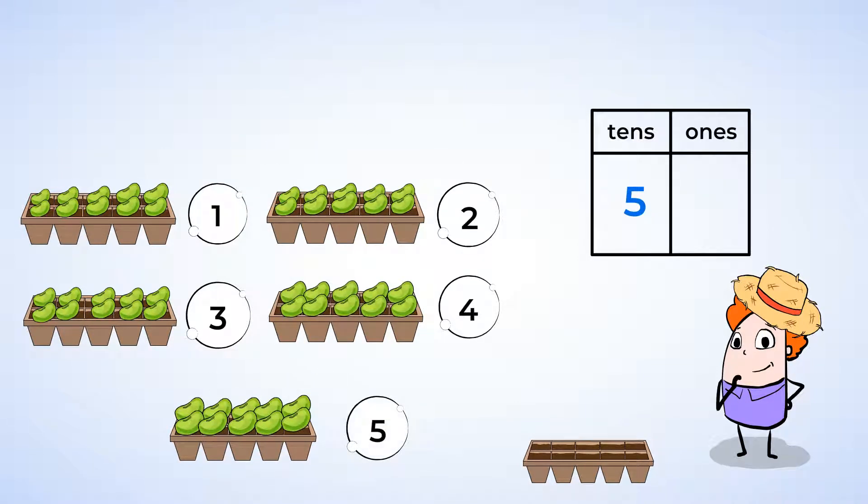And are there any left over? Nope. 5 10s, 0 1s. There are exactly 5 groups of 10s, which means we need 5 trays. Great work, you mighty gardener.